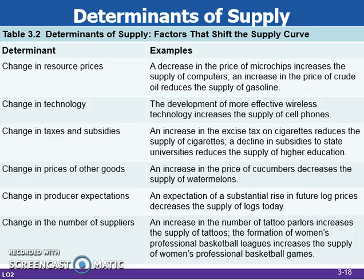Subsidies are payments made by the government to firms to influence production. If subsidies are increased on a specific product, supply increases. If subsidies are decreased on a specific product, supply decreases.